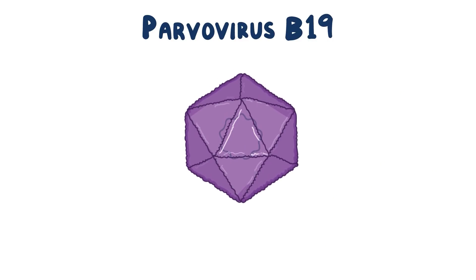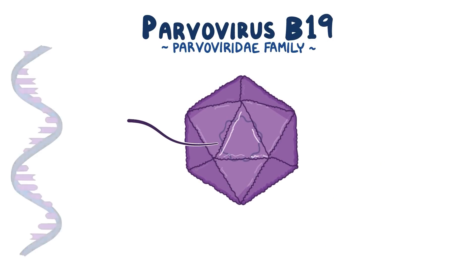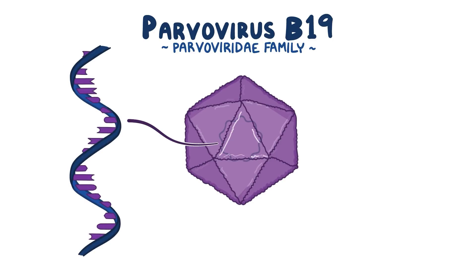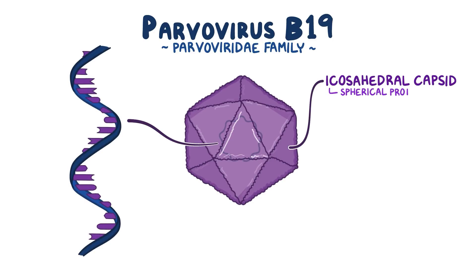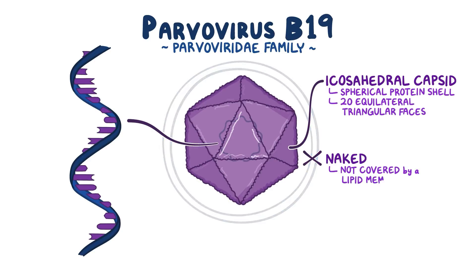Parvovirus B19 is part of the parvoviridae family. It's a single-stranded DNA virus surrounded by an icosahedral capsid, which is a spherical protein shell made up of 20 equilateral triangular faces. And it's naked because the capsid is not covered by a lipid membrane.